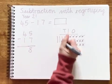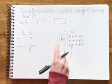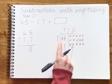Now I need to take away my 10, so I'm going to cross out one more 10. How many have I got left? 10, 20.